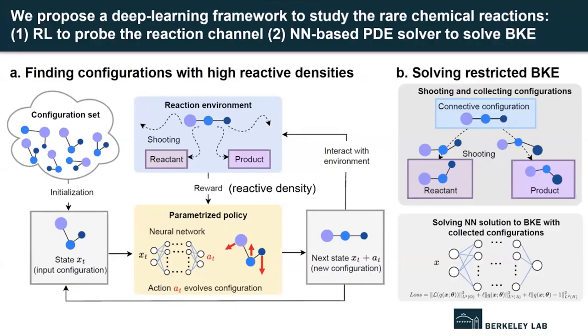In the first part, we aim to find the regions where the reaction is likely to occur. We first want to find some configuration with high reactive probability, which can be estimated by shooting multiple trajectories from that configuration. The goal of the agent in our reinforcement learning framework is to evolve the configuration gradually such that it reaches the high reactive density region. Once we identify such a configuration with high reactive probability, we shoot multiple trajectories from it. These trajectories characterize the reaction channels where the reaction is likely to occur. Finally, we use the configurations on these trajectories to solve the backward Kolmogorov equation and obtain the approximate committor function.